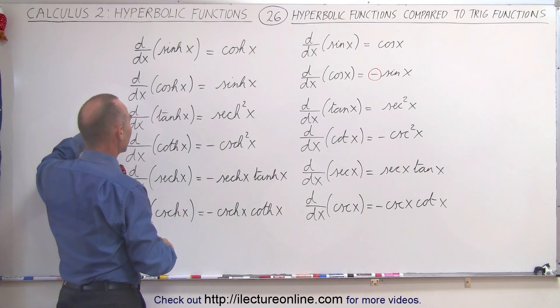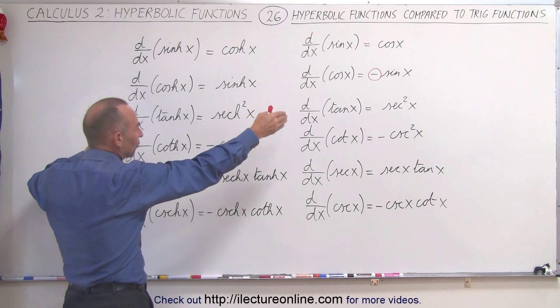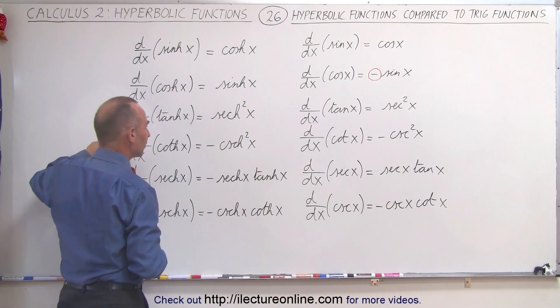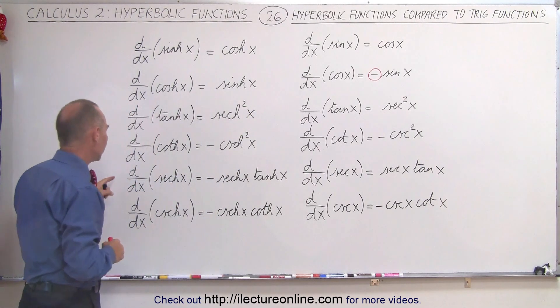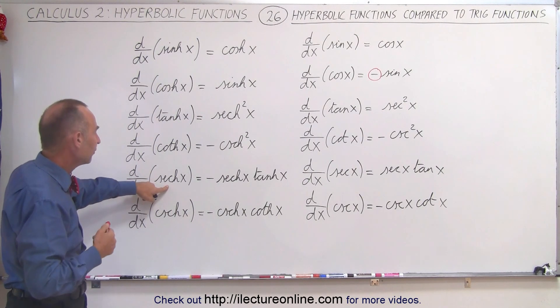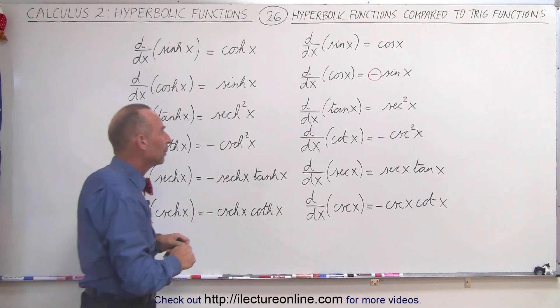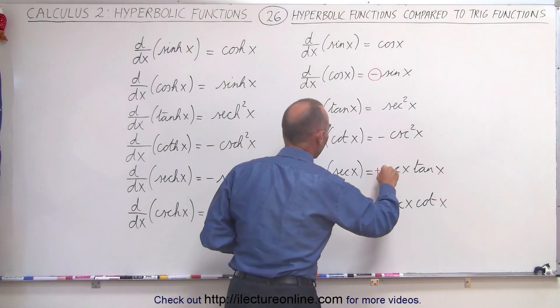Now here, when we take the derivative of the hyperbolic tangent and cotangent, we get similar results for the trigonometric functions. And again, there's a difference when we take the derivative of the hyperbolic secant of x, because that way we get the negative here, where we don't get a negative, we get a positive over here.